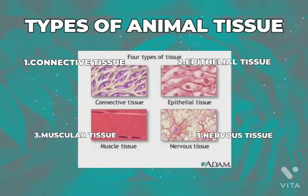The last topic is types of animal tissue. There are four types: connective tissue, epithelial tissue, muscular tissue, and nervous tissue. Connective tissue connects, separates, and supports other types of tissues in the body. Epithelial tissue forms the covering on external body surfaces and internal body organs, and lines the body cavities and cavities of hollow body organs, blood vessels, and ducts.